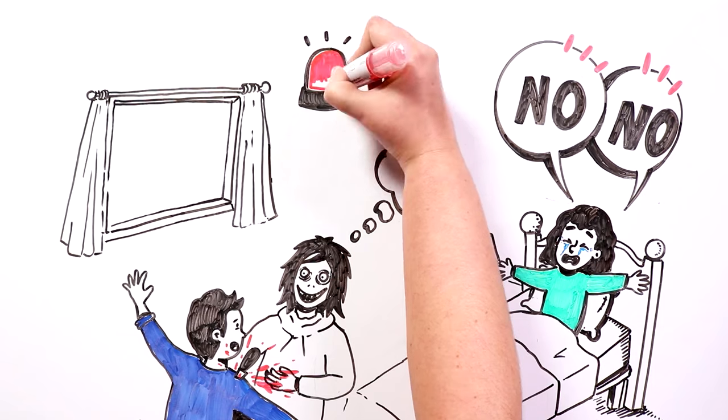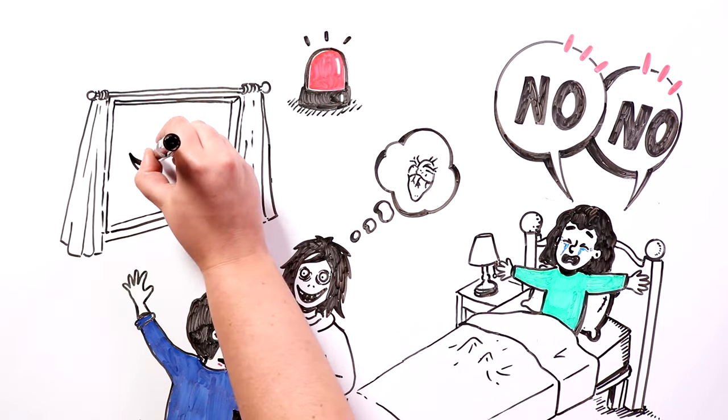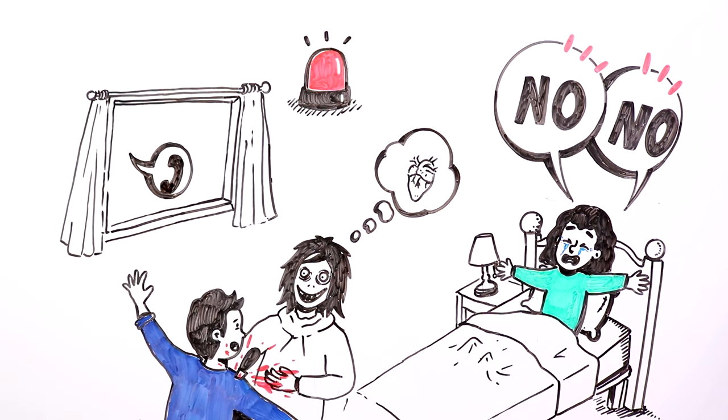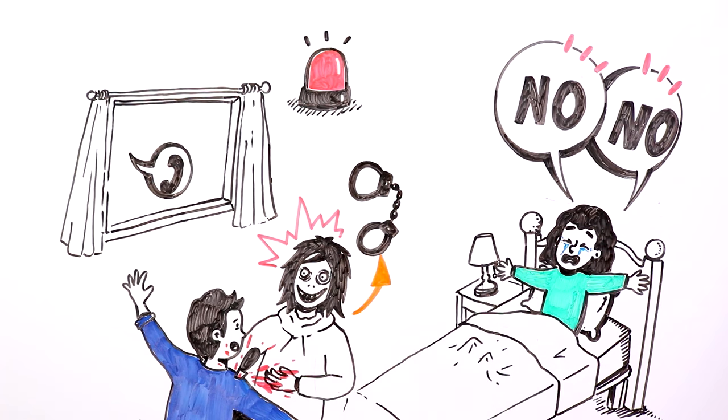And suddenly, they started hearing police sirens in the distance. The neighbors had called the police due to Maria's screaming. Jeff was surrounded. The agents would arrest him pretty soon.